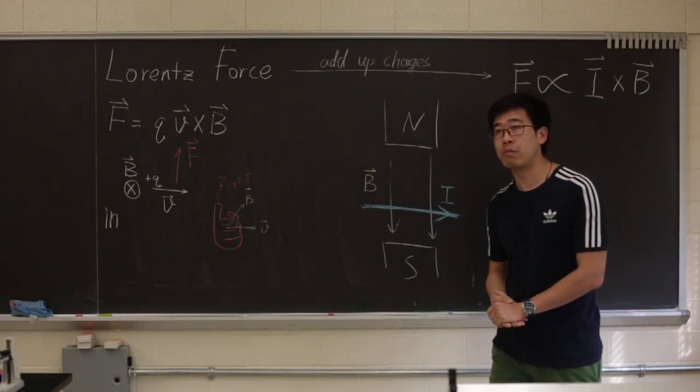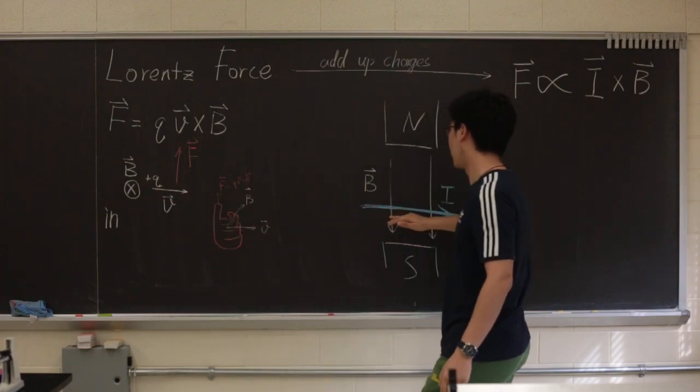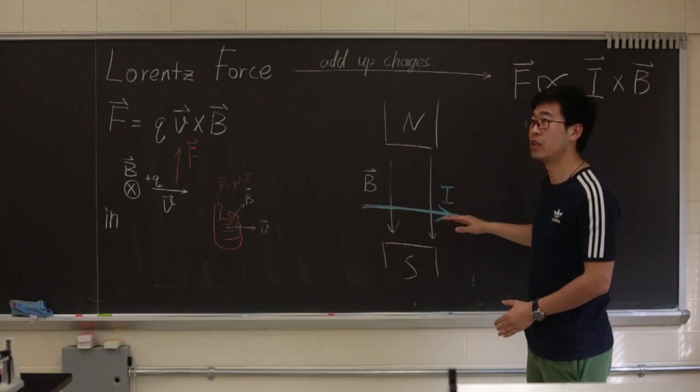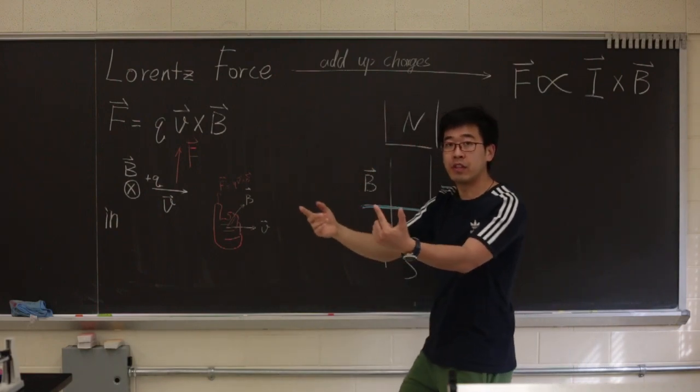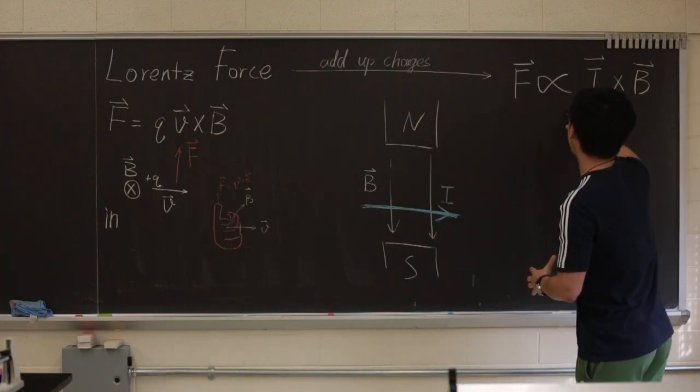So for our experiment, we won't look at the charge. Instead, we'll look at how a wire with current in it reacts to it. Basically, we think of it as multiple charges moving the same direction. So basically, we add up the charges and we will end up having this.